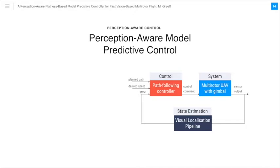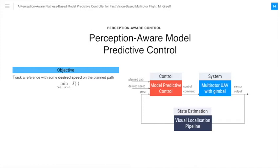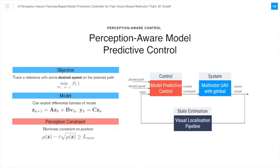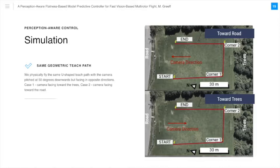To design our perception-aware MPC, we augment a standard model predictive or MPC problem with our perception constraint. In other words, we try to compute a sequence of control inputs V that optimize a trajectory objective. In our case, we try to track a reference with some desired speed. This is subject to a vehicle model; here we exploit the differential flatness of our UAV, while adhering to this additional perception constraint, which we have converted to a non-linear constraint on the position of our UAV. To implement this, we require the landmark locations and gimbal orientation as inputs to our controller.